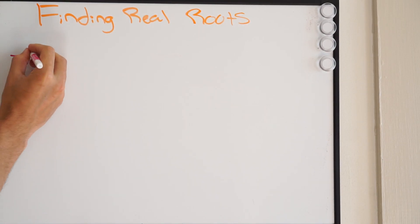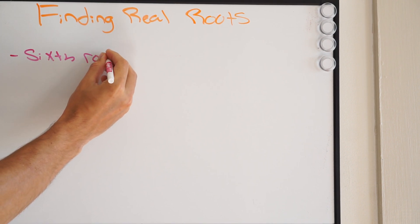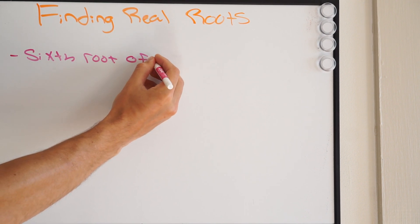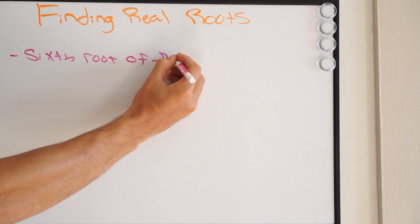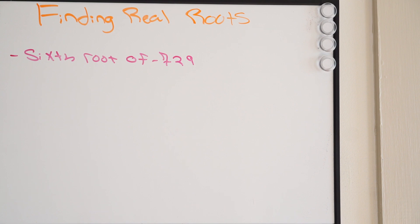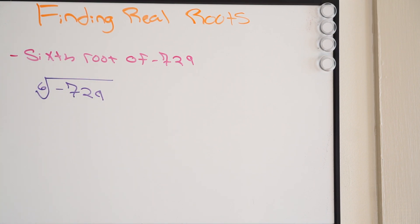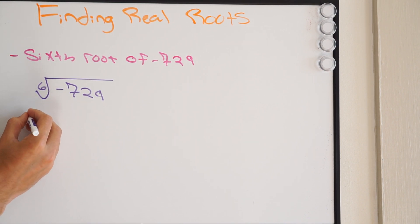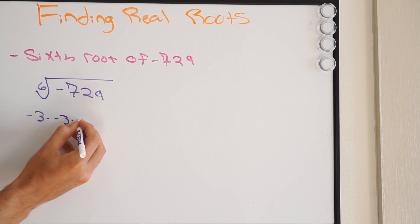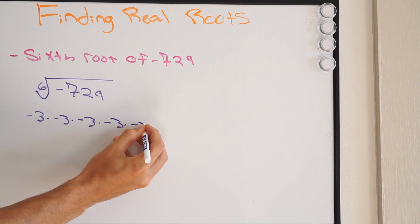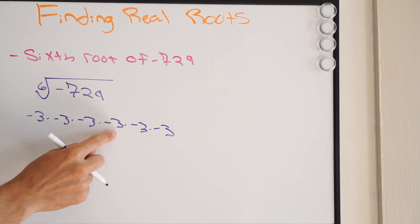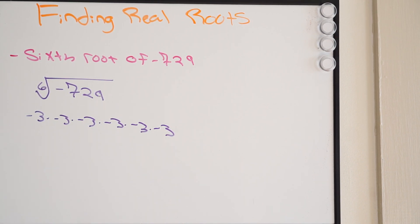Let's try another one — sixth root of negative 729. Now be careful: six is an even number. If I take any number and multiply it by itself an even number of times — for example, negative 3 times negative 3 times negative 3 times negative 3 times negative 3 times negative 3 — it will always be positive, because it's even.